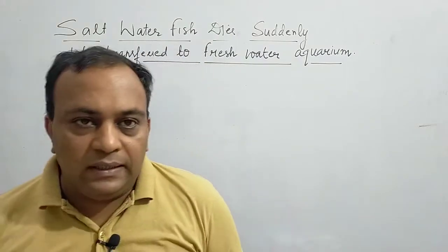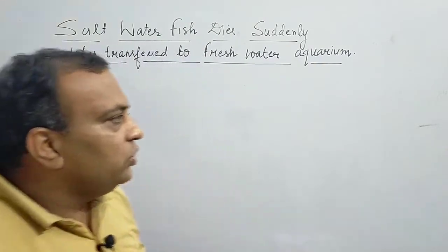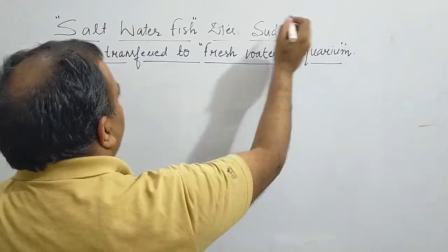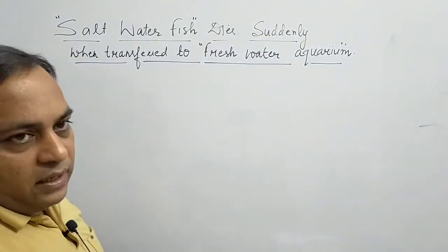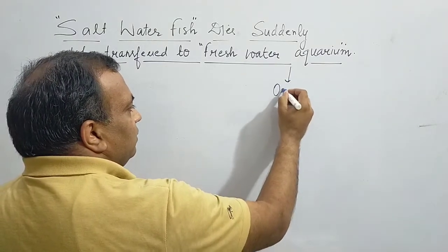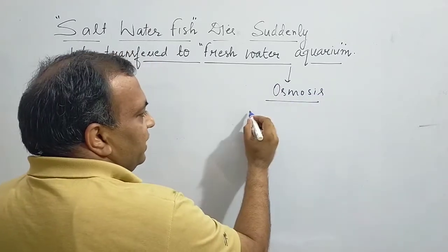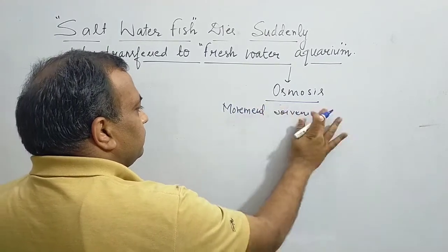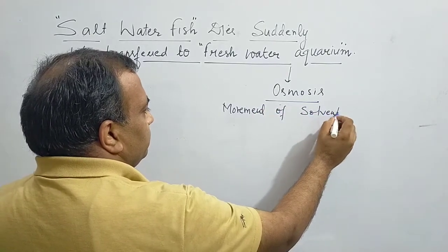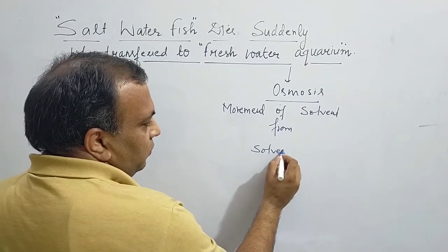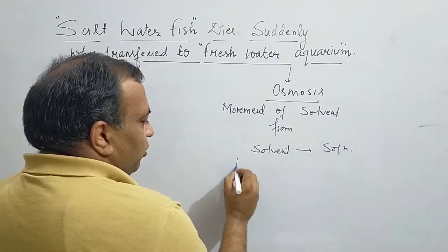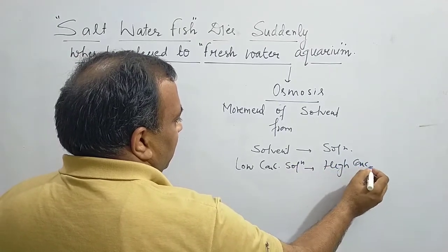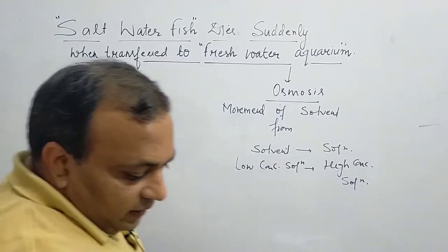Students, today we will discuss a situation that is explained on the basis of osmosis. The situation is that when a salt water fish is transferred to a fresh water aquarium, it suddenly dies. This reason is based on osmosis. Osmosis is simply the movement of solvent — from solvent to solution, or from a low concentrated solution to a high concentrated solution.